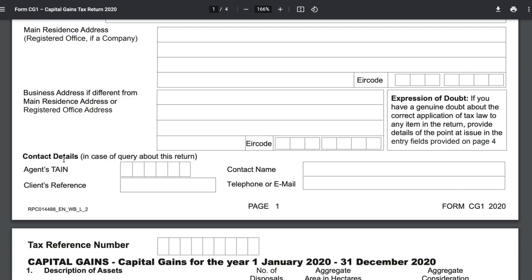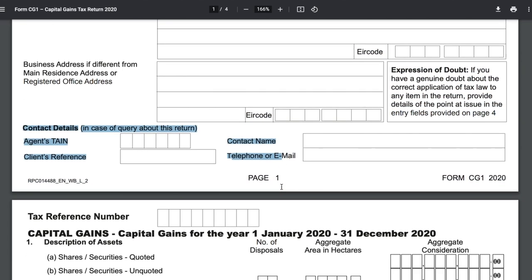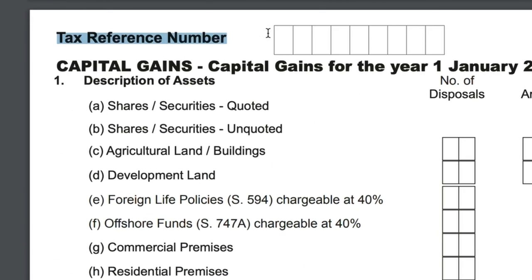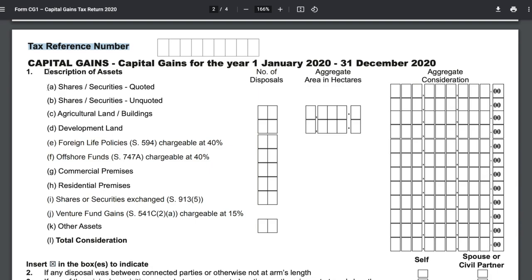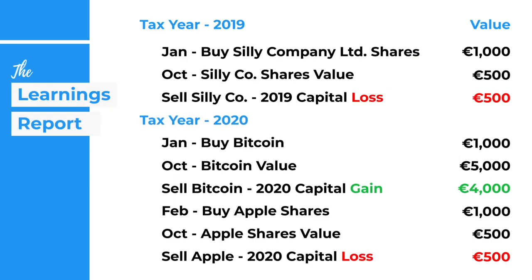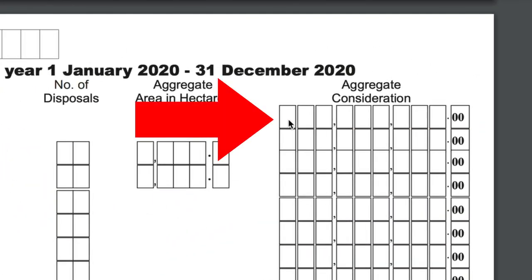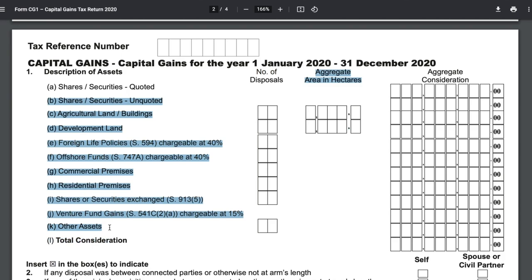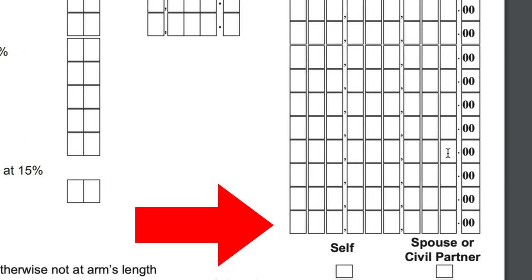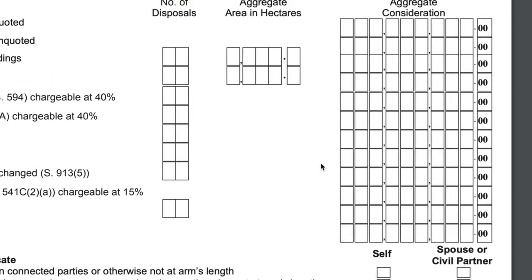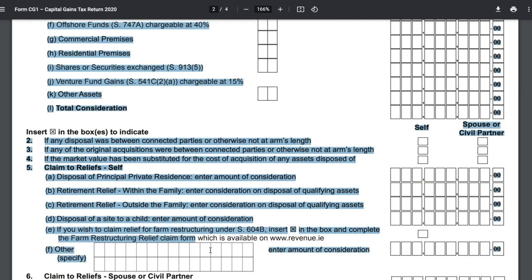The contact details section can be left blank unless a tax professional is filling in the form on your behalf. Moving into the form, add your PPS number at the top and scroll to Section 1a, where you put in the total value of your sales in the tax year. In our example, this is €5,000 worth of Bitcoin plus €500 from Apple shares — so we enter €5,500 as the aggregate consideration in Section 1a. Sections 1b to 1k can be ignored, and for total consideration in Section 1i, enter the same €5,500 figure.